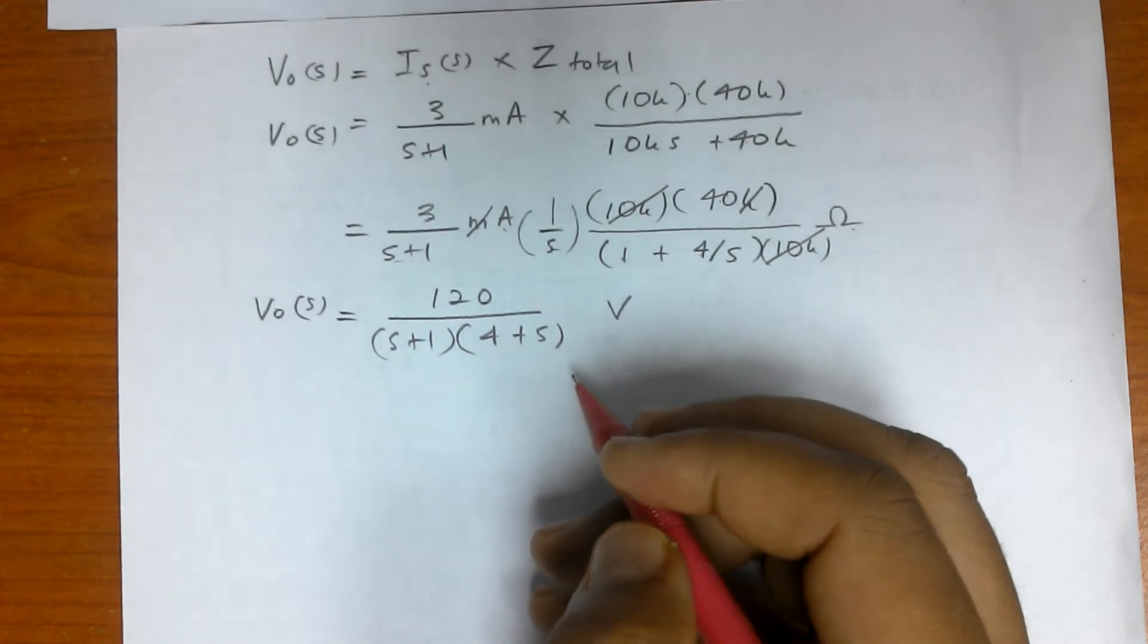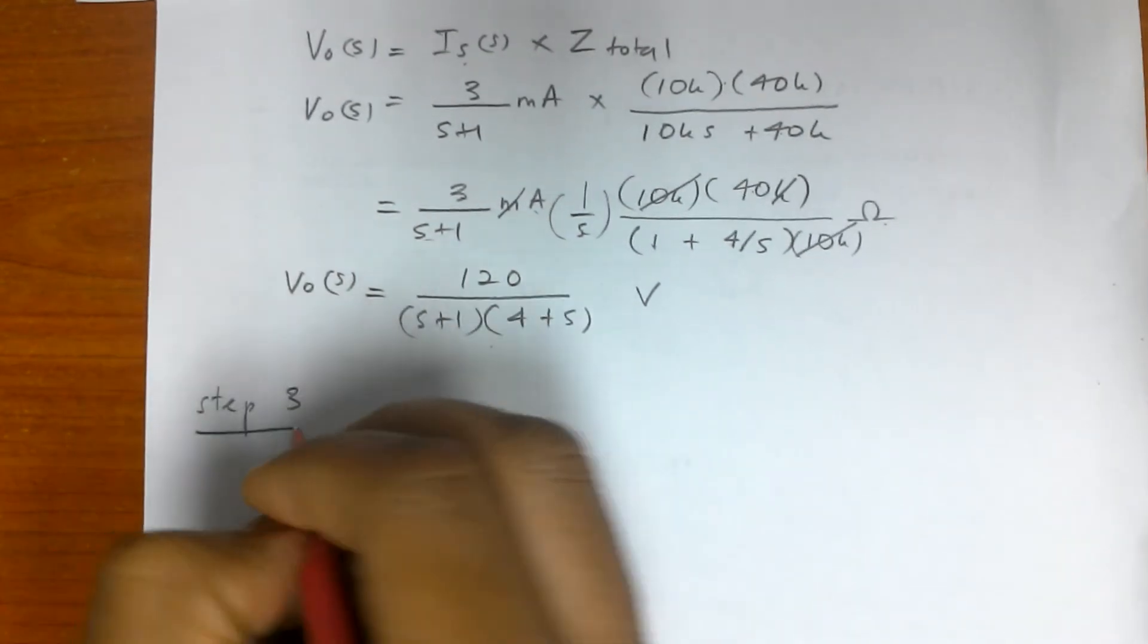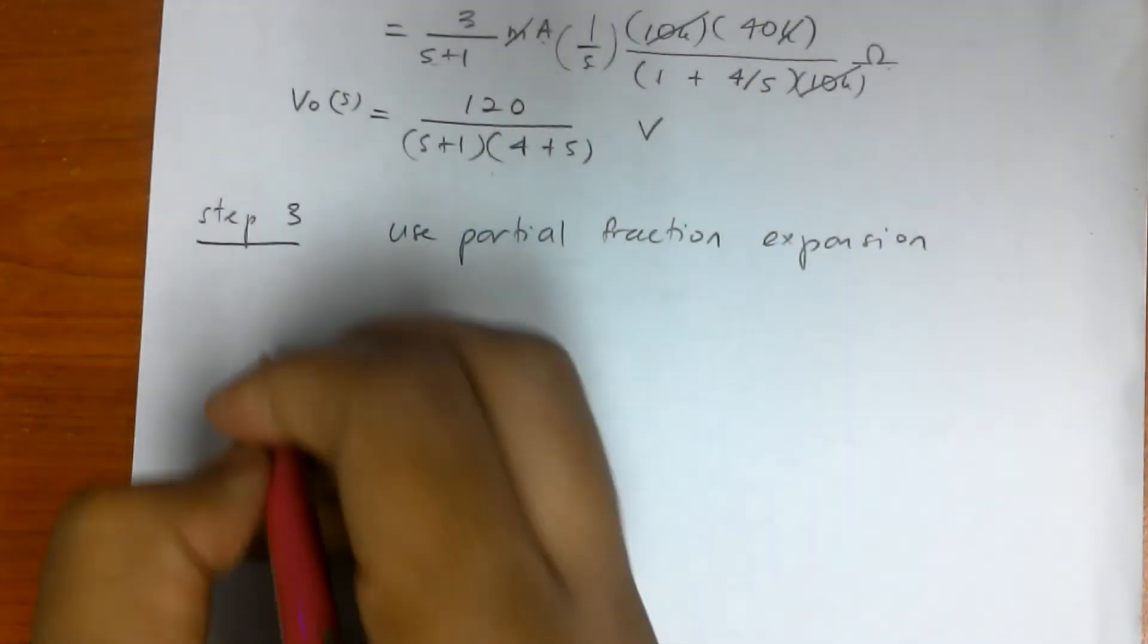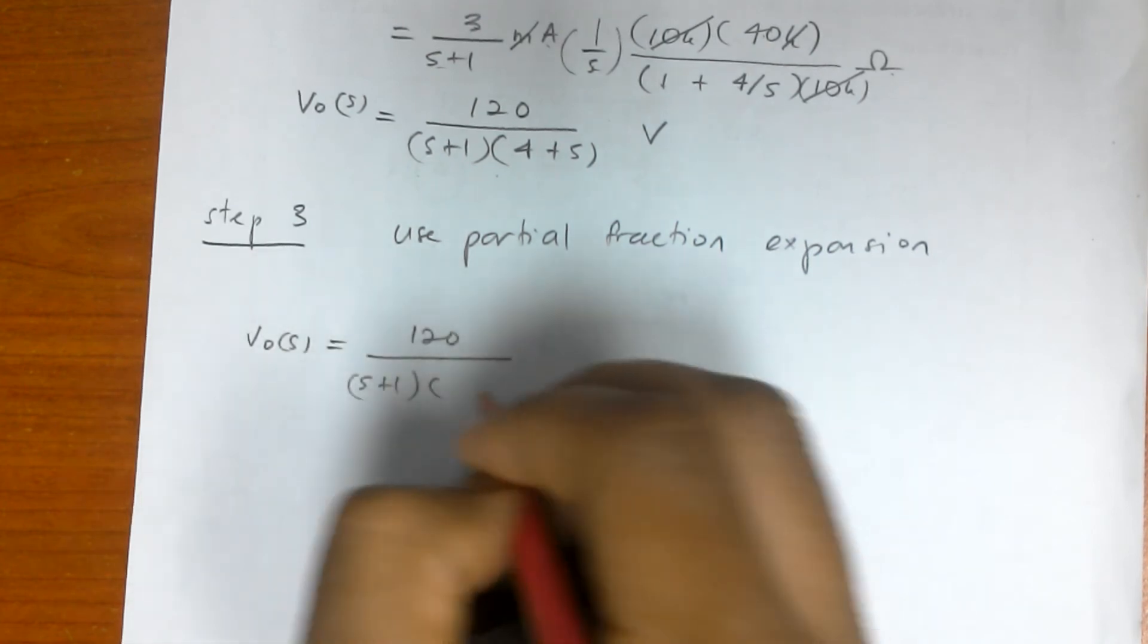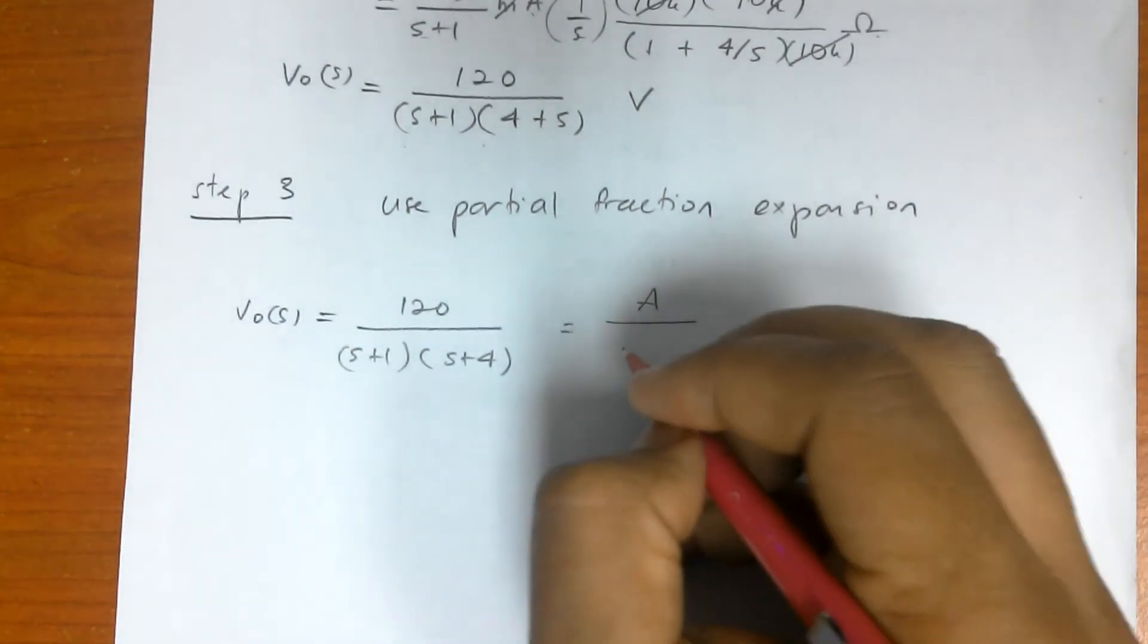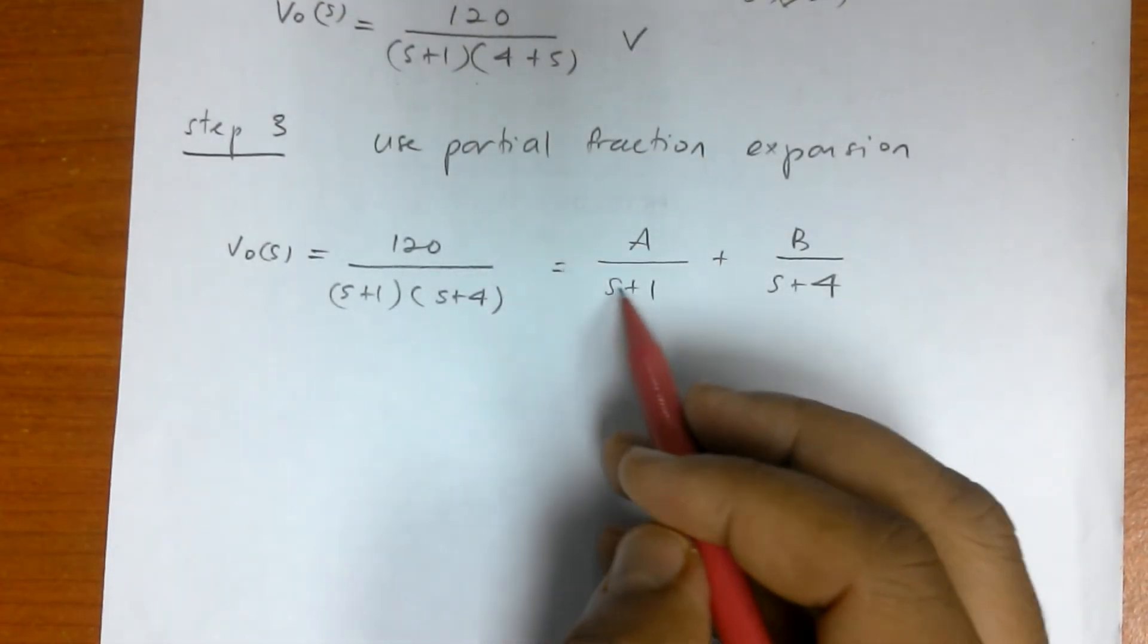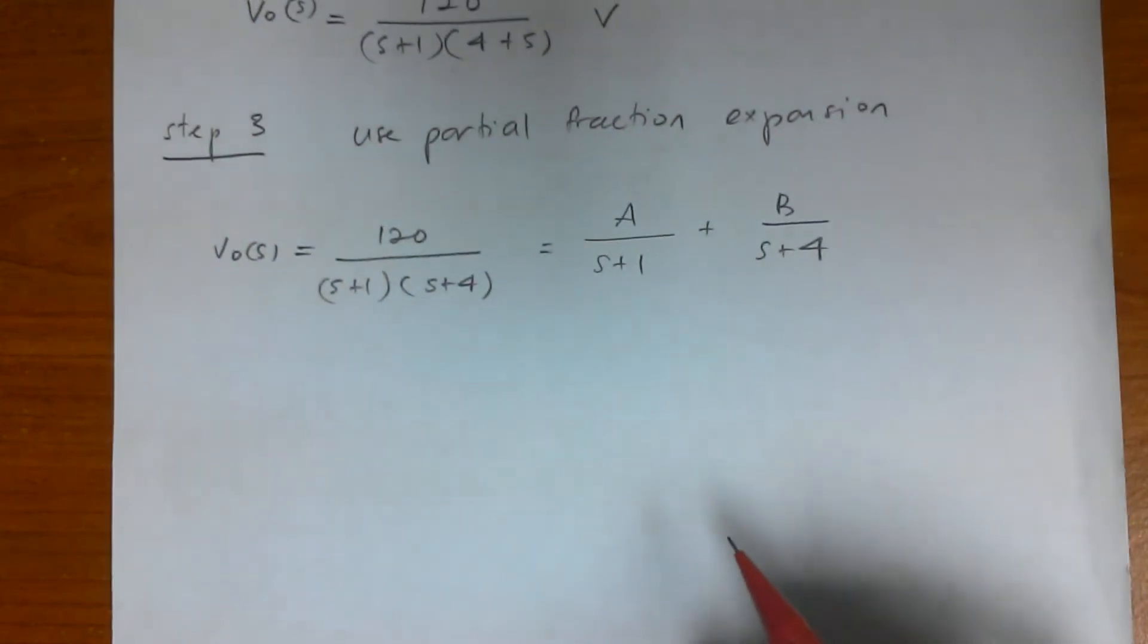Now once we have arrived to this term, we can go to the next step, which is use partial fraction expansion. Now V out S is 120 over S plus 1 times S plus 4. We can try to get this term into A over S plus 1 plus B over S plus 4.